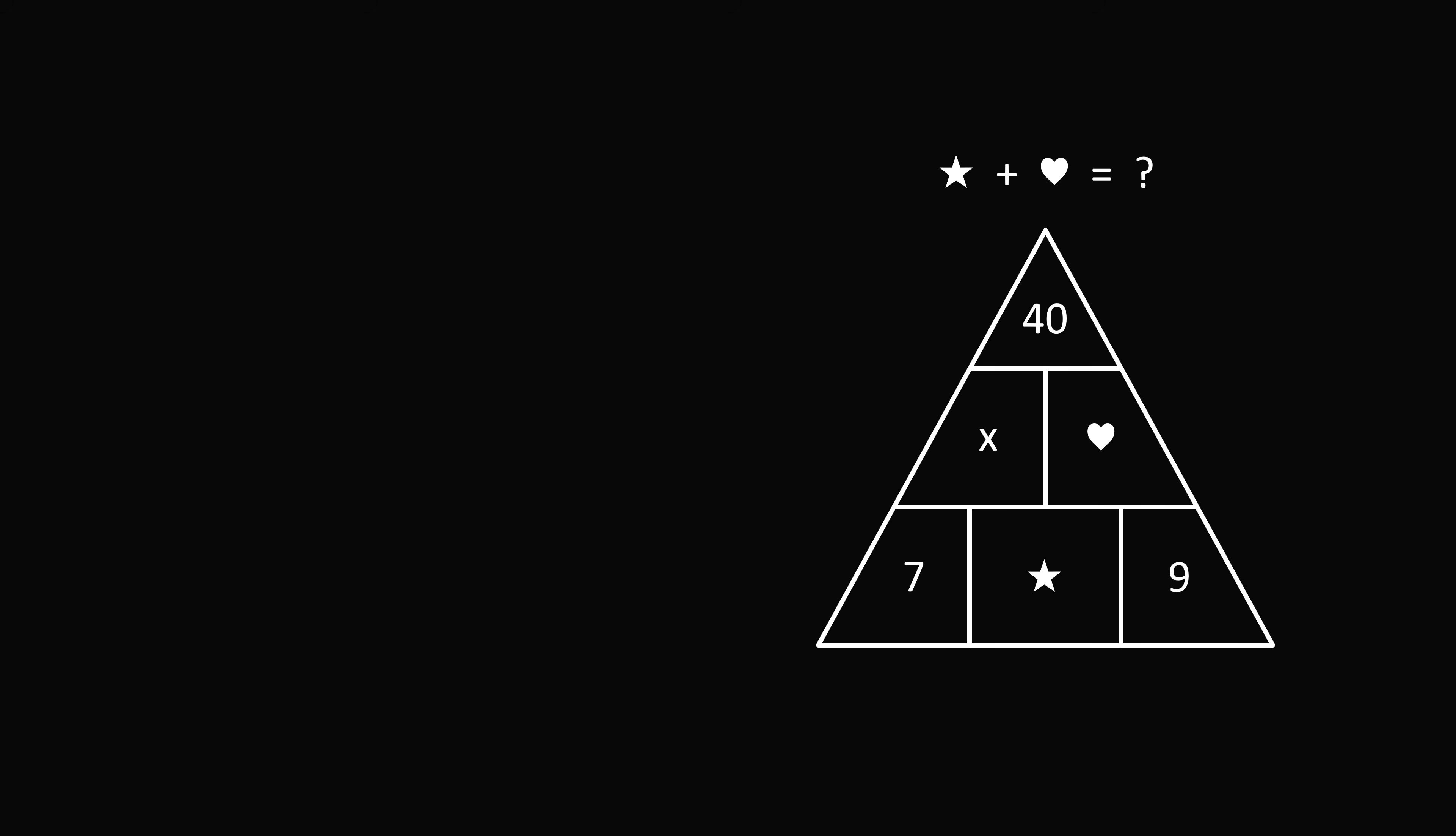Let's take a look at what we know from the number pyramid. We know that 40 is equal to the sum of the two numbers below it, which is equal to x plus heart. So we know one equation is that 40 is equal to x plus heart. What do we know about x? Well, x must be equal to the sum of the two numbers below it, so x is equal to 7 plus star. So that gives another equation. Now what would happen if we substitute x from the second equation into the first equation? We get that 40 is equal to 7 plus star plus heart. All we need to do is subtract 7 from both sides, and we get that star plus heart is equal to 33.